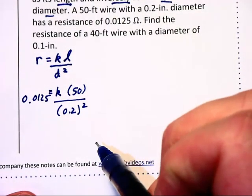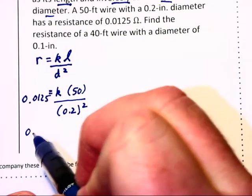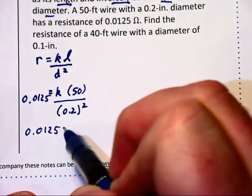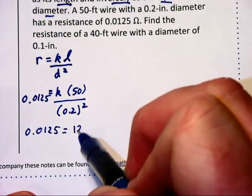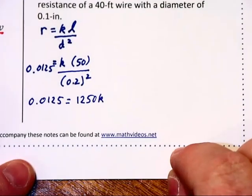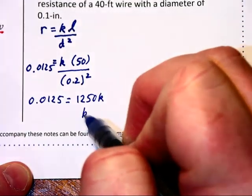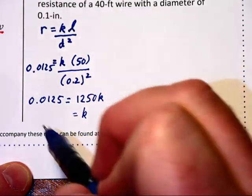Let's go through and simplify the right-hand side. 0.0125 is equal to 1250 K, when you divide that on your calculator. And we will then find that K is equal to 1 ten-thousandth, 0.00001.